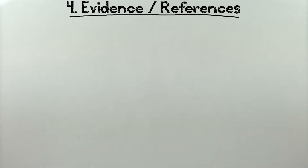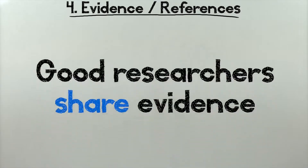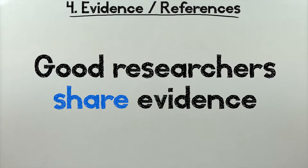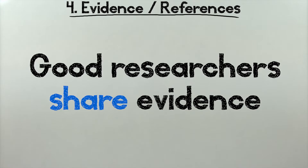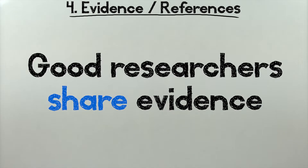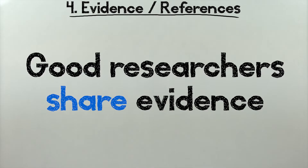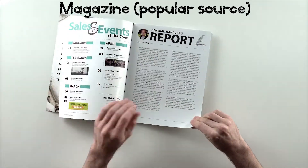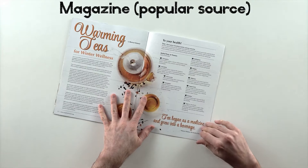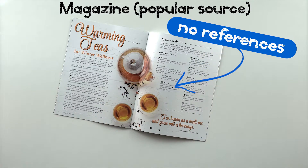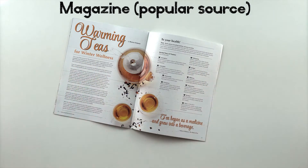4. Evidence and References. If a study is legitimate, it'll provide a list of the documents its authors drew from and supply, usually in detail, the evidence upon which its conclusions are based. Evidence and references come in various formats, and that's fine — what matters is that they exist. Some documents, such as articles from popular sources like magazines and newspapers, won't include references. When that happens, you might want to refer back to number 2 and ask if the information's corroborated. References and evidence are what keep people honest.